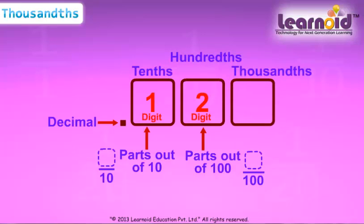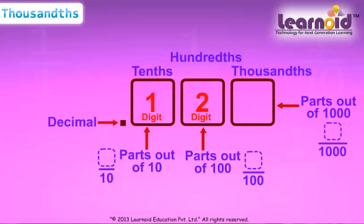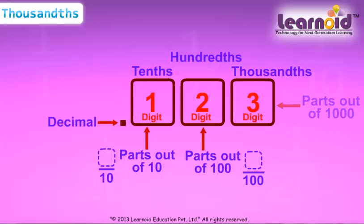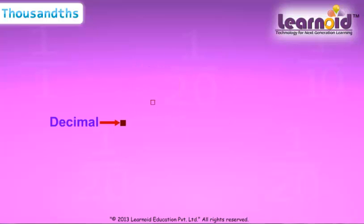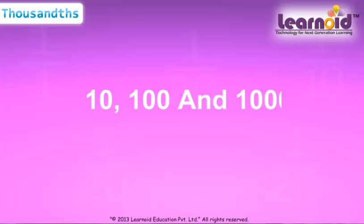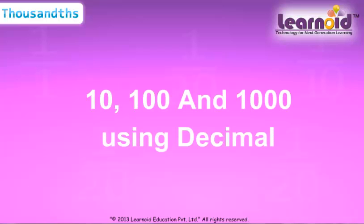Parts out of 1000 can be written as thousandths. The thousandths place is the third digit after the decimal point. Now we have learnt writing parts of 10, 100, and 1000 using decimals.